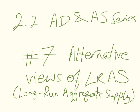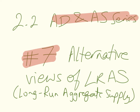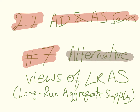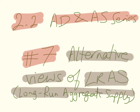This is video number 7 of the Aggregate Demand and Aggregate Supply series, which is Unit 2.2 of the IB Macroeconomic Syllabus. In this video, I'm going to introduce and explain alternative views of long-run aggregate supply, LRAS.